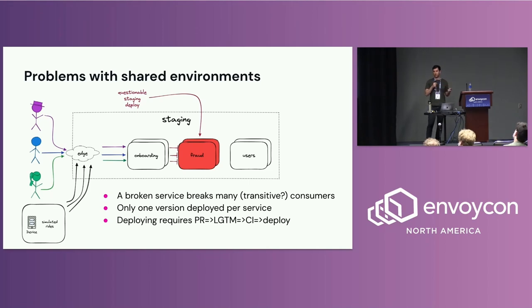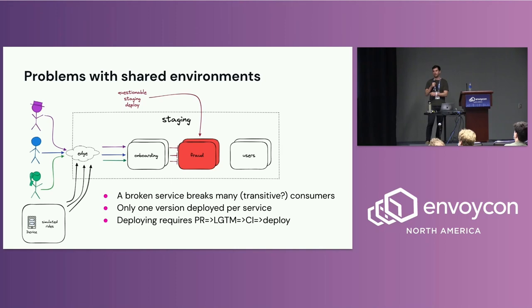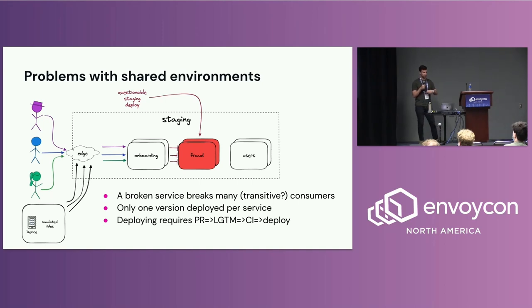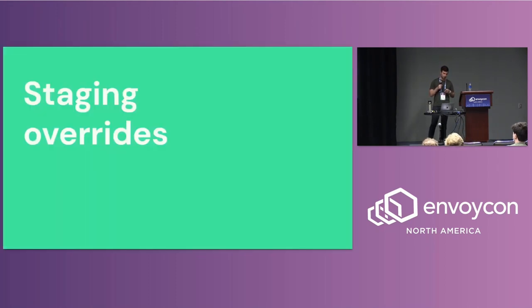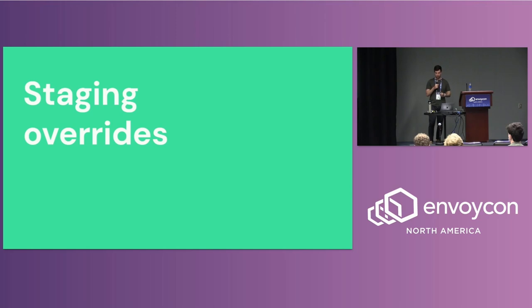Staging also had collaboration problems: since there was one core version running for a given service, teammates who wanted to test their own branches had to take turns — 'hey I'm testing this, can you wait an hour?' — which slows down velocity. And deploying to staging was more complicated than testing in development — you had to create a pull request, get a plus-one, run through all CI checks, and then start the deploy pipeline. These problems led us to realize we couldn't use staging as-is and needed modifications.